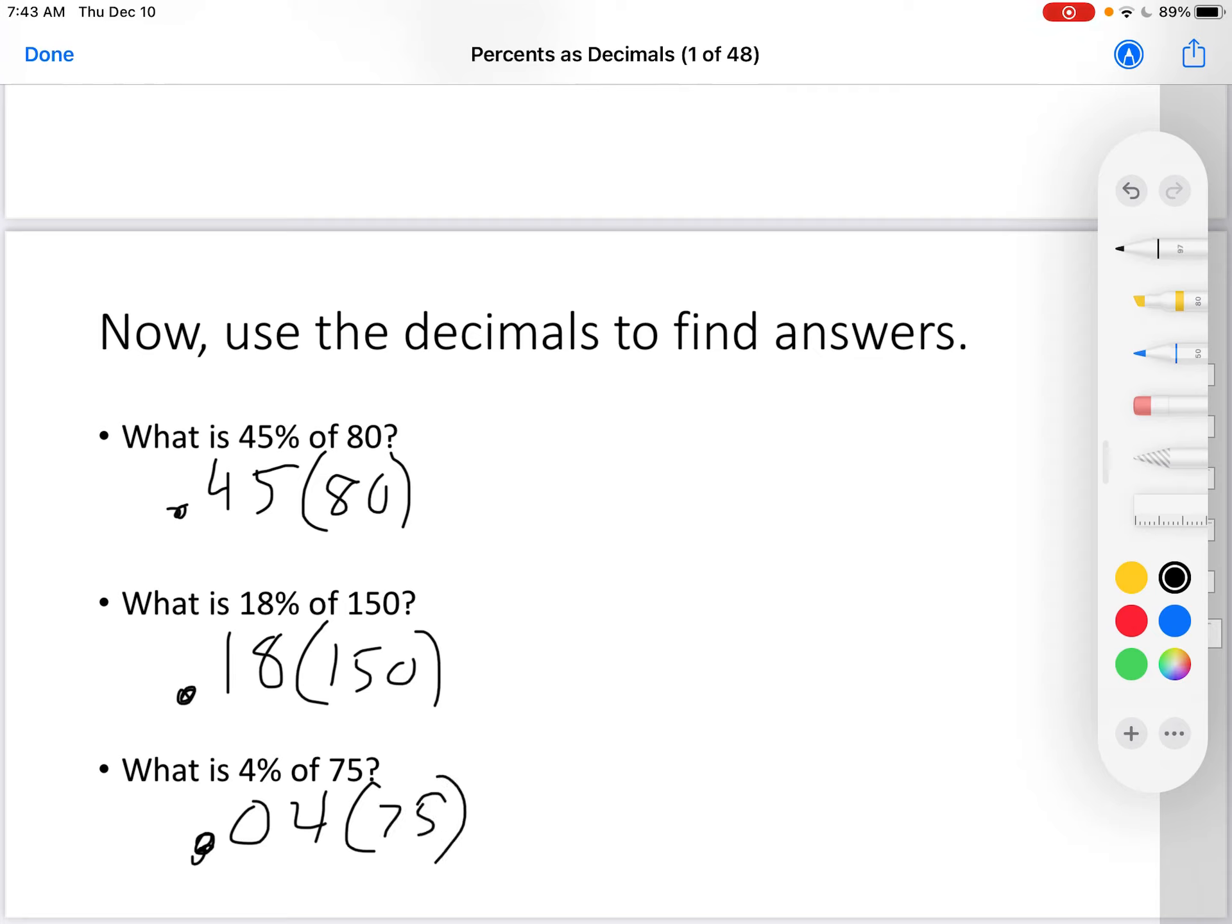And remember, it doesn't matter which one you put on top, and when you multiply, you don't have to worry about the decimals until you're done. So I'm going to do 45 times 80. 0 times anything is just 0. 8 times 5 is 40. 8 times 4 is 32, plus the carried 4 is 36. But remember, there are two decimal places. So I'll put two decimal places in my answer, and the answer ends up being 36.